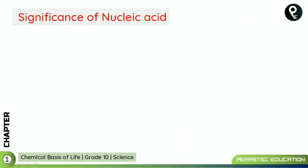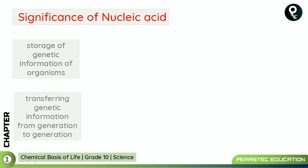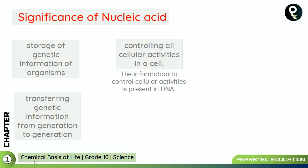Now, the significance of nucleic acid, one by one: Storage of genetical information of an organism happens with the help of DNA. It is also responsible for transferring genetical information from generation to generation — sometimes your grandfather and you will look alike, or even your great-grandfather. Controlling all cellular activities in a cell also happens from DNA, and the information to control cellular activities is present in DNA.